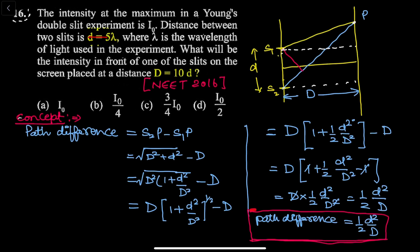The intensity at the maximum in Young's double slit experiment is I₀. Distance between two slits is d = 5λ, where λ is the wavelength of light used in the experiment. What will be the intensity in front of one of the slits on the screen placed at a distance D = 10d? This is a conceptual question.